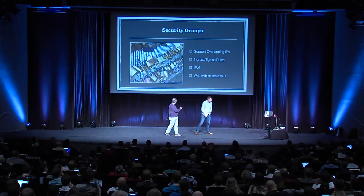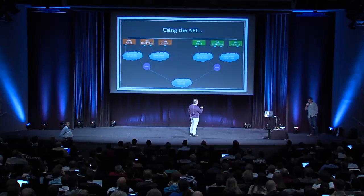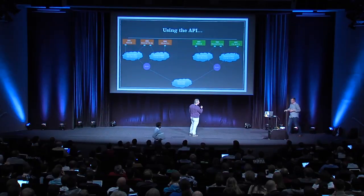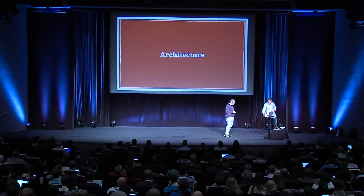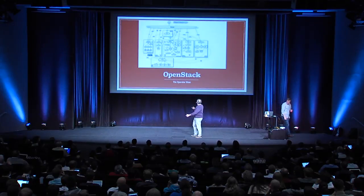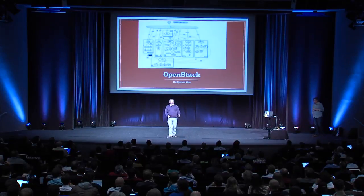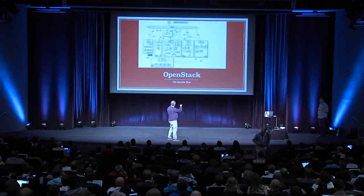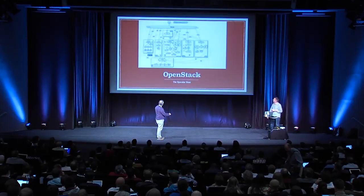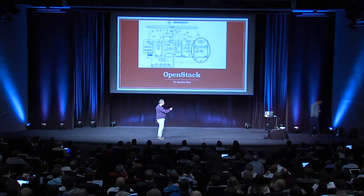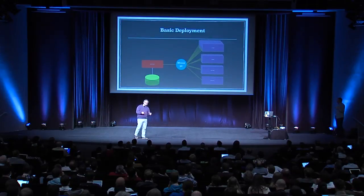Thanks, Mark, for that introduction. Now it's up to me to talk about the architecture. This is the operator view of the OpenStack architecture — as you can see, it's very simple and not confusing at all. Neutron is that little bit on the right side. From a high-level perspective, it's relatively simple.